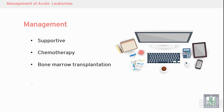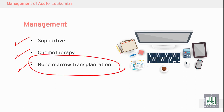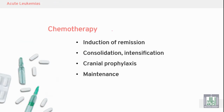Treatment of acute leukemia includes supportive treatment by giving the patient RBCs, platelets, or white blood cells and antibiotics. Specific treatments include chemotherapy to eradicate the malignancy, retinoic acid therapy, and bone marrow transplantation. Bone marrow transplantation, stem cell transplantation, or gene therapy can correct the mutation leading to leukemia.